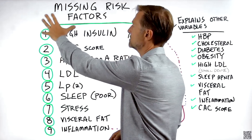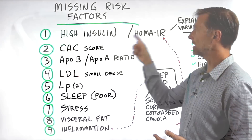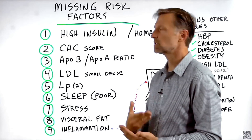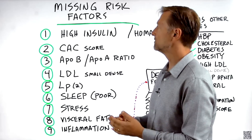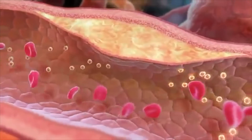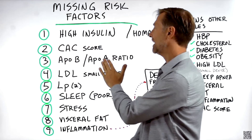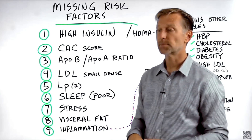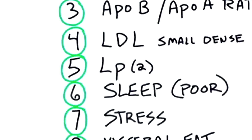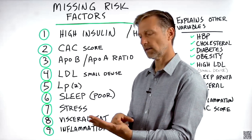Let's go through the missing risk factors that relate to heart attacks. Number one: high insulin and a test for insulin resistance called HOMA-IR. Number two: a CAC score — coronary artery calcification score — which correlates to how much calcium is in your arteries and is one of the best predictors not just of heart attacks but of any reason for dying; the more calcium you have in your arteries, the worse shape you are in. Number three: your APOB to APOA ratio — you want high APOA and low APOB; this gives you a very high statistical correlation predictive of a heart attack. Number four: LDL small dense particles — this will also give you a good prediction. Number five: LP(a) — this is a very powerful risk factor and you should get a test done to see if yours is high or low.